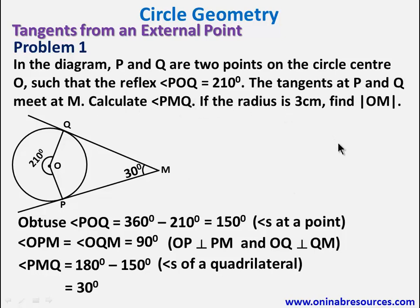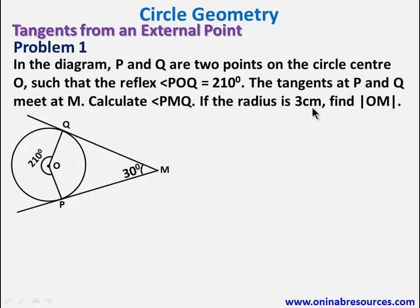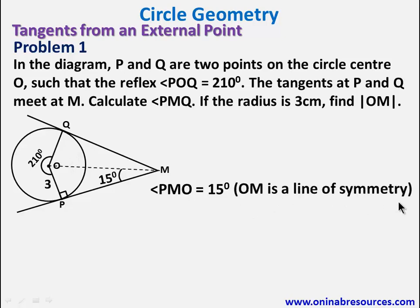We go to the second part of the problem. It says if the radius is 3 centimeters, find OM. So we need to join O to M so that the radius is 3 centimeters. This is the radius here, 3 centimeters. We said this is 90 degrees. Since this line, OM is line of symmetry, we see that this angle will be divided into 2 so that angle OMP is 15 degrees. So we said angle PMO is 15 degrees since OM is a line of symmetry.